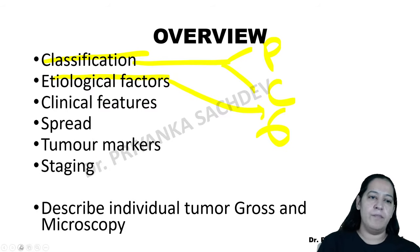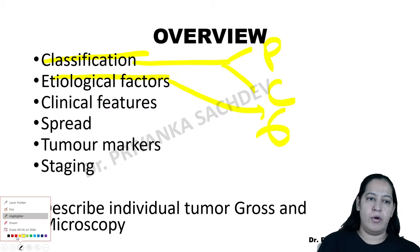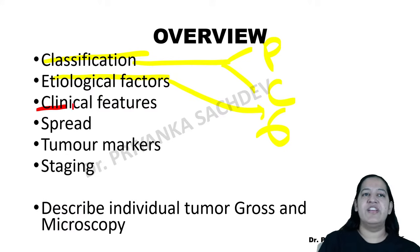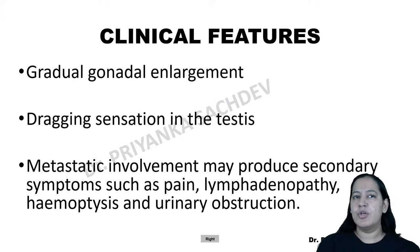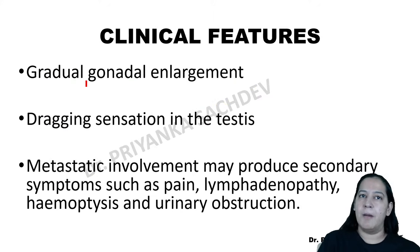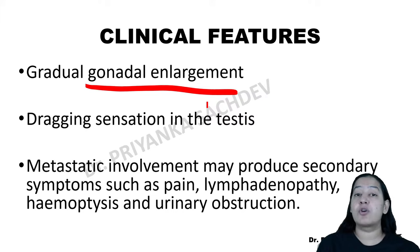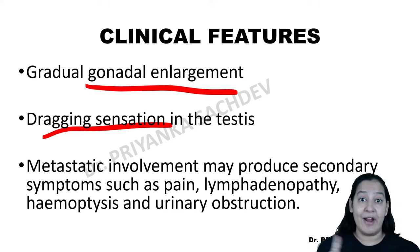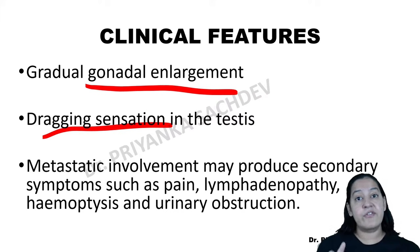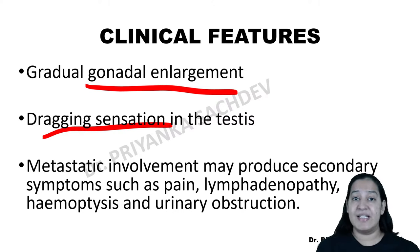Clinical features of testicular tumor: the patient usually presents with unilateral scrotal enlargement with a dragging sensation but no significant pain. On examination, one testis is enlarged. If metastasis is present, additional symptoms appear depending on the site — hemoptysis if lung is involved, urinary obstruction if urinary bladder is involved, lymphadenopathy if lymph nodes are involved.